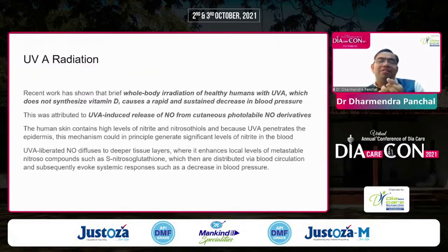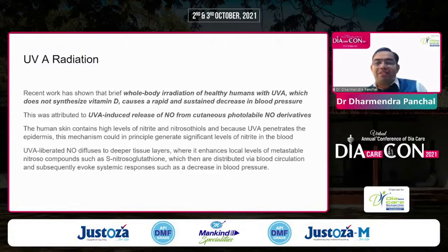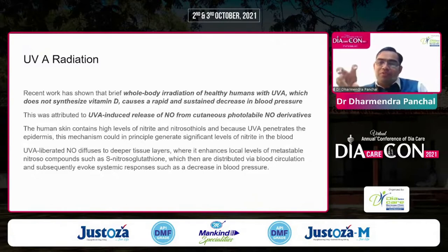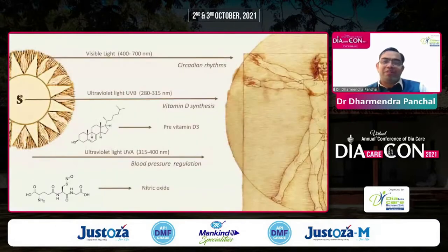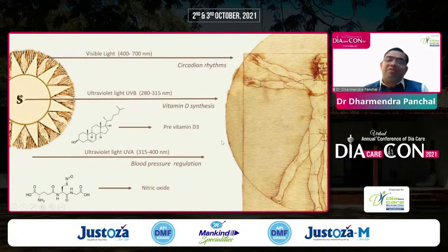Not only UVB radiation, but UVA radiation is also responsible for a rapid and sustained decrease in blood pressure, attributed to UVA-induced release of nitric oxide from cutaneous photolabile nitric oxide derivatives. Human skin contains high levels of nitrides and nitrosols. Because UVA penetrates the epidermis, it generates significant levels of nitrite in the blood and enhances local levels of metastable nitrosol compounds, which are distributed via blood circulation and evoke a systemic response that decreases blood pressure. So visible light is responsible for circadian rhythm, UVB for vitamin D synthesis, and UVA for blood pressure regulation.